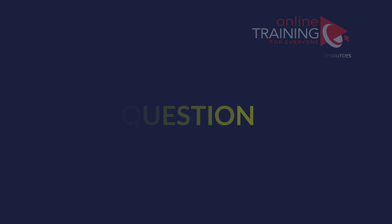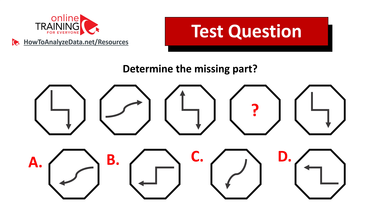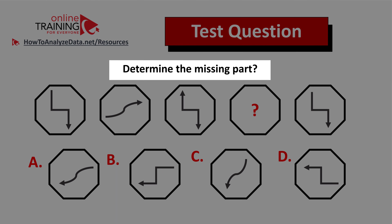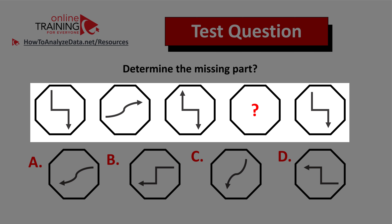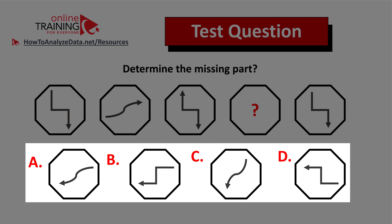Let's look at an interesting question you might frequently see on the test. Determine the missing part. You're presented with five hexagons that contain different types of arrows inside, and one arrow is missing. You have four different choices presented at the bottom of the screen.